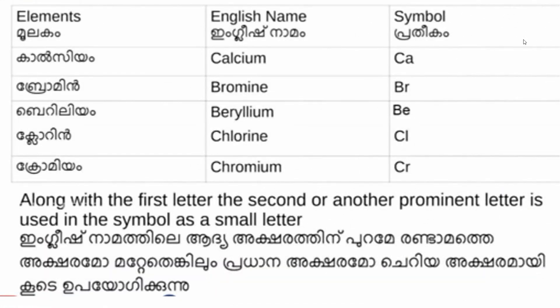Elements, English name, symbol: Calcium — symbol Ca, capital letter C, small letter a. Bromine — symbol Br, capital letter B, small letter r. Beryllium — symbol Be. Chlorine — symbol Cl. Chromium — symbol Cr. The second letter is added as a small letter.